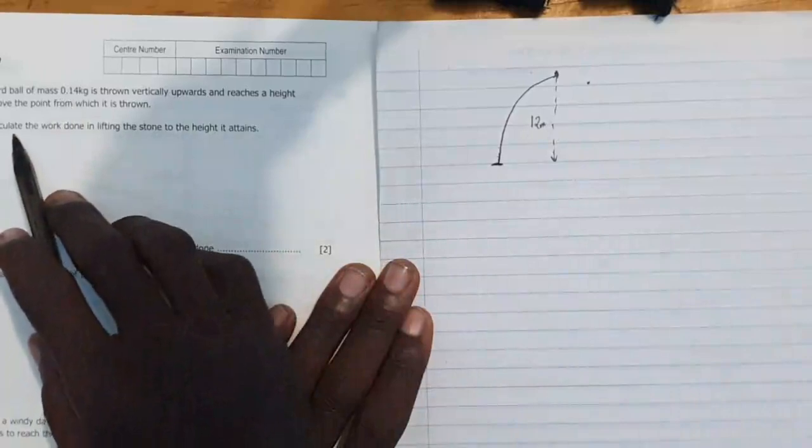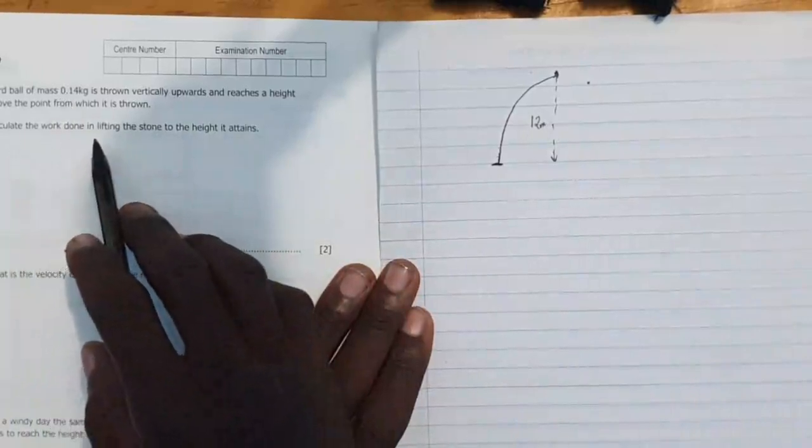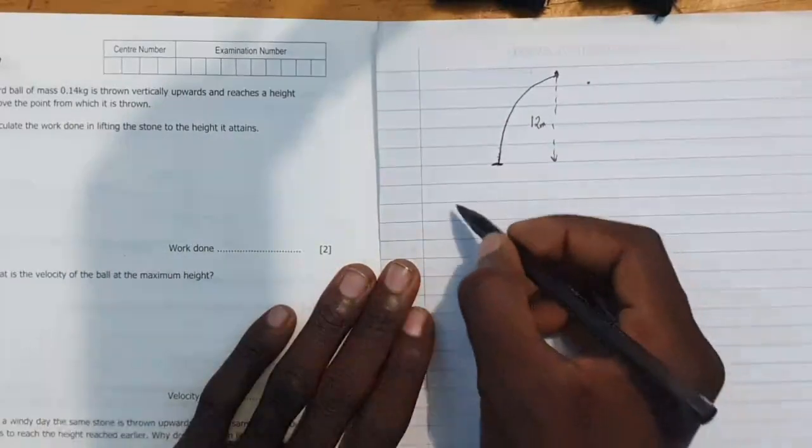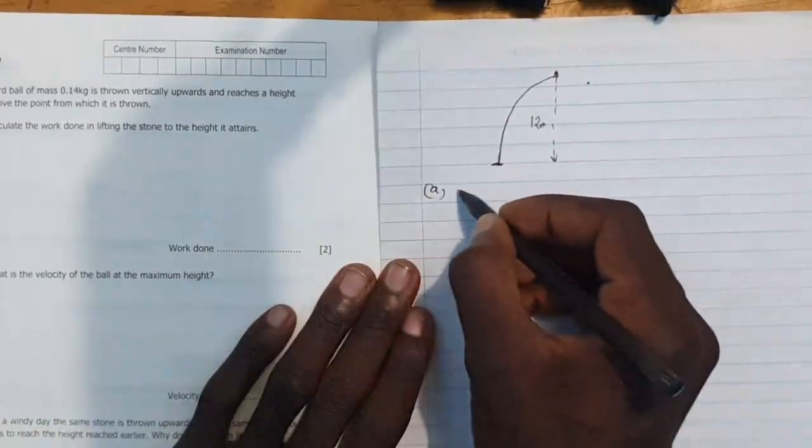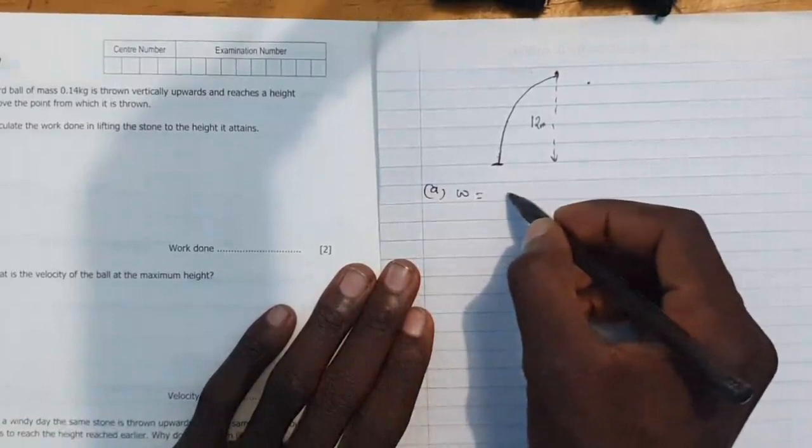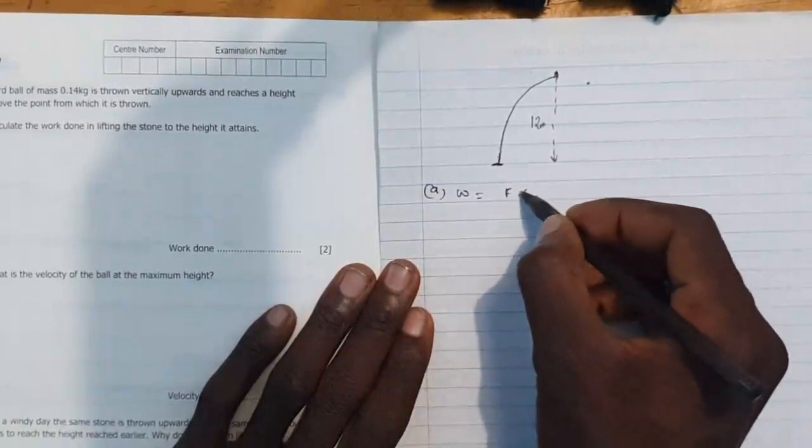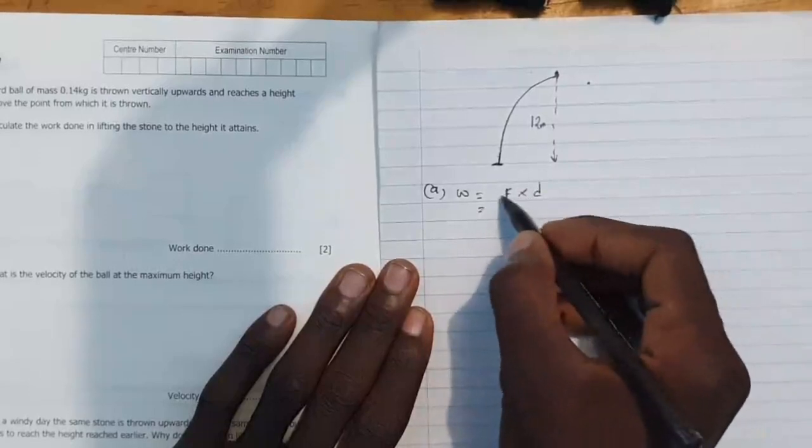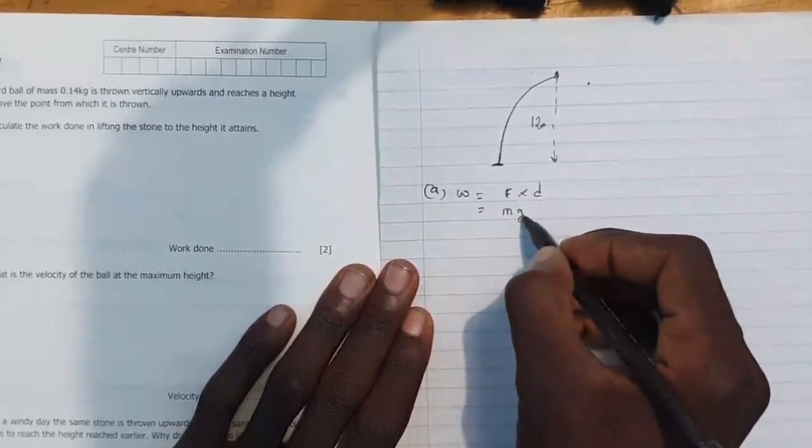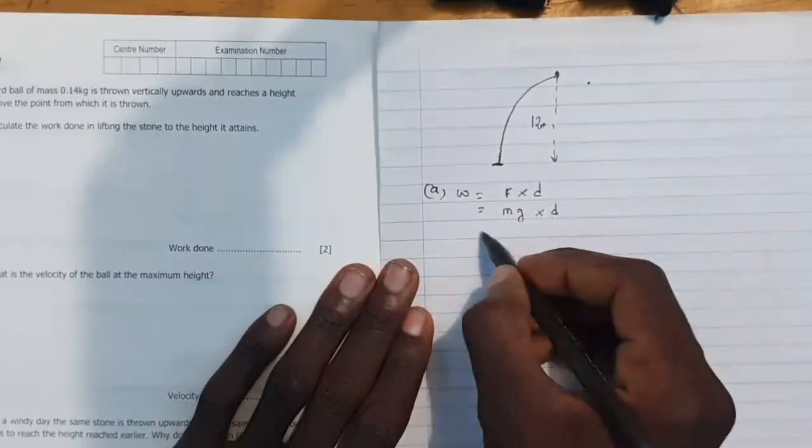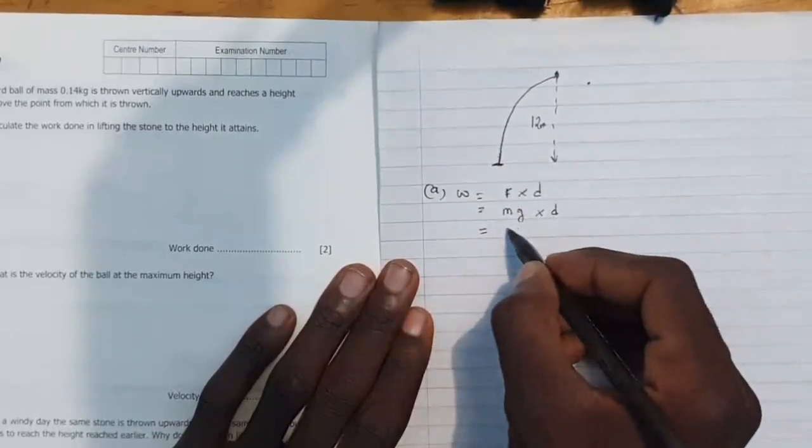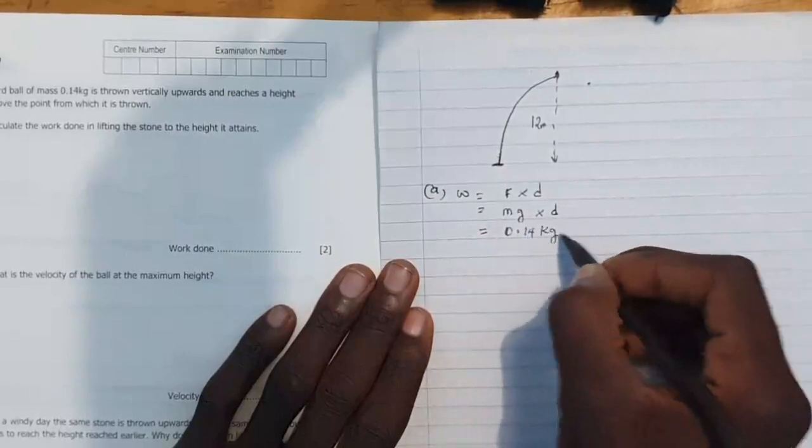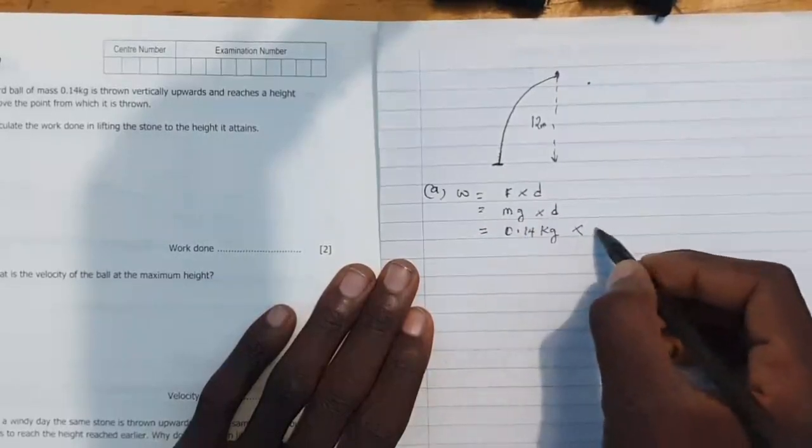Then they are saying this ball has got a mass. Now they are saying calculate the work done in lifting the stone to the height it attains. We know that work is equal to force times distance moved. Now here, remember force is mass times gravity, then we have distance.